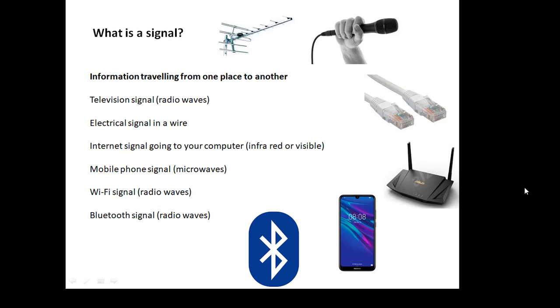A mobile phone signal which uses microwaves. A wifi signal which uses kind of microwaves, radio waves as well. Or a Bluetooth signal. The mobile, the wifi, and the Bluetooth use very similar kinds of waves. They overlap with each other. But information traveling from one place to another is a signal.